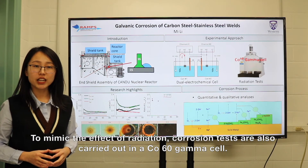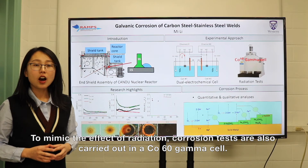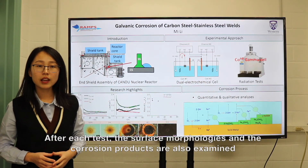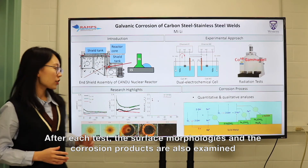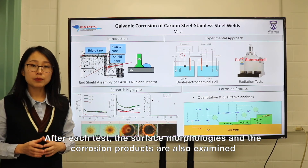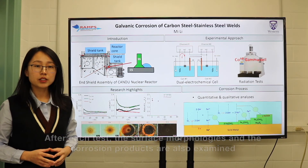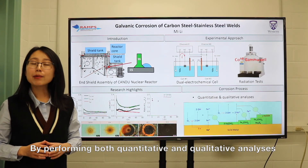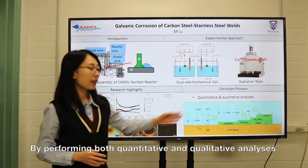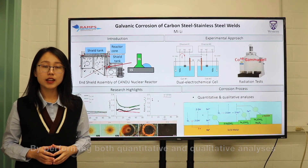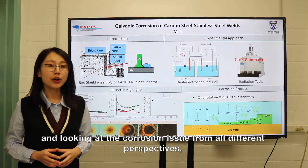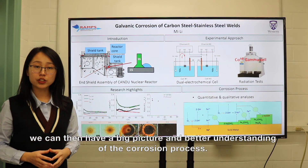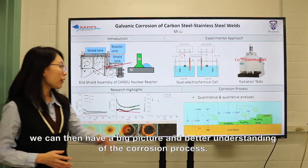To mimic the effect of radiation, corrosion tests are also carried out in a cobalt-60 gamma cell. After each test, the surface morphologies and the corrosion products are also examined using well-developed surface analysis techniques. By performing both quantitative and qualitative analysis and looking at the corrosion issue from all different perspectives, we can then have a big picture and better understanding of the corrosion process.